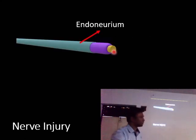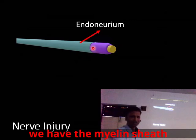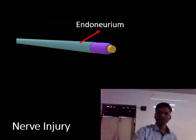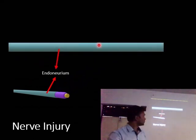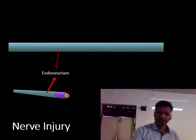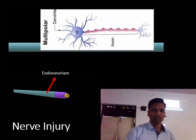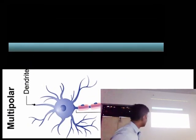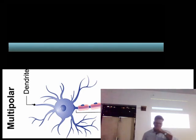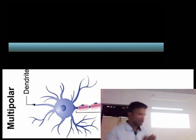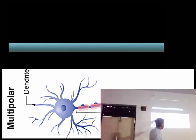We have this neuron with the myelin sheath covered by endoneurium. Zooming out, we again see the endoneurium and the neuron. The axon receives its nutrition from the cell body in order to perform its various functions.